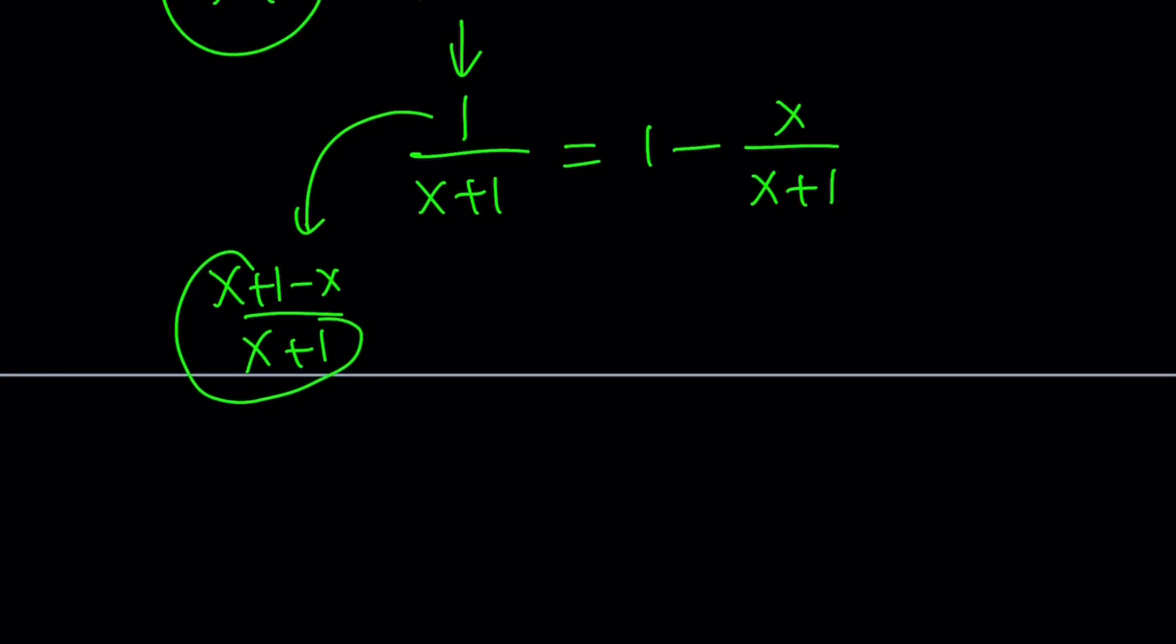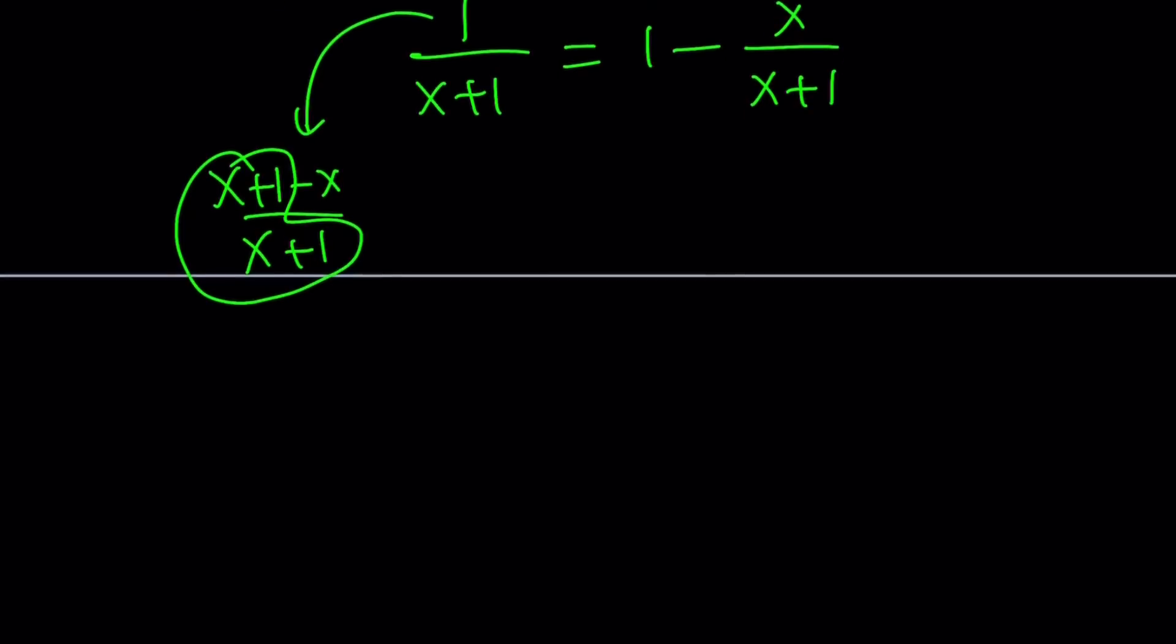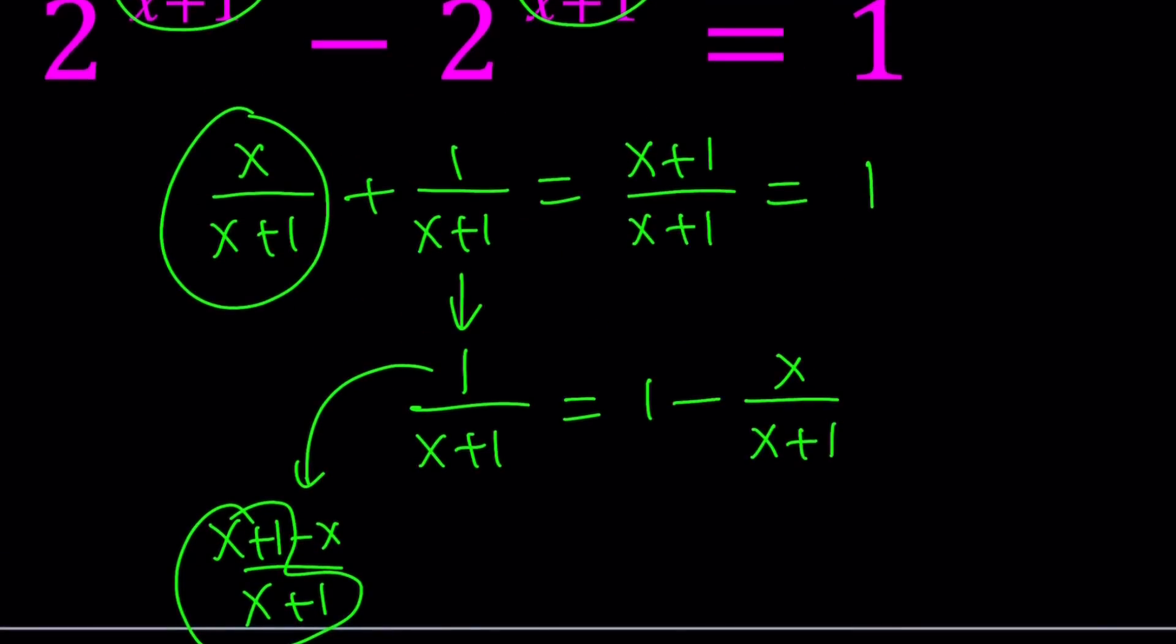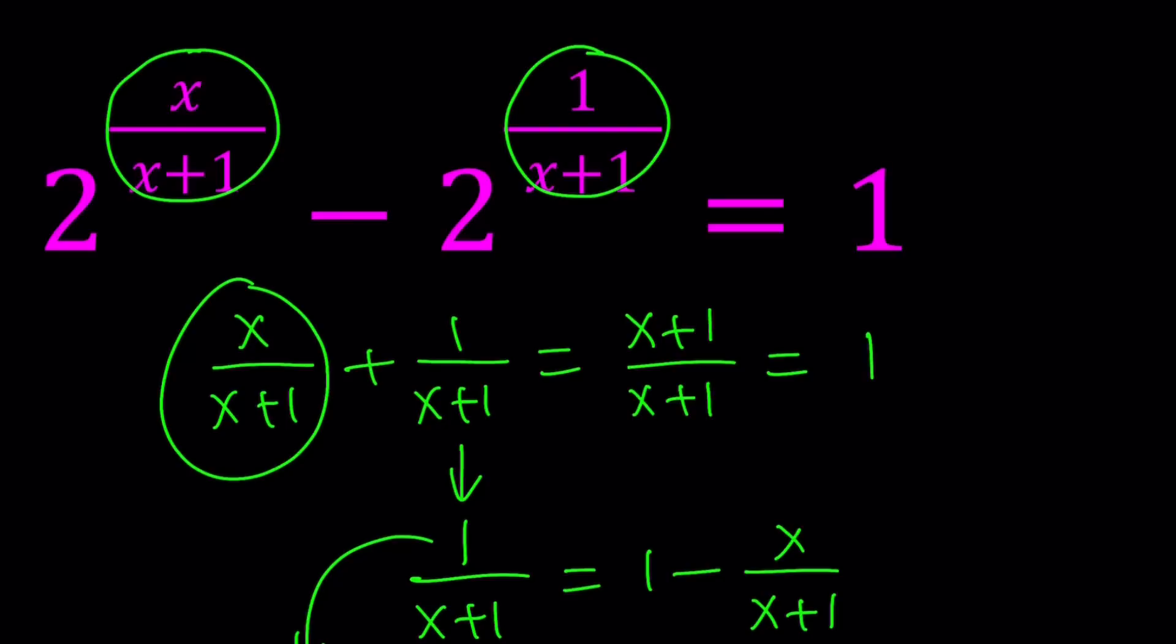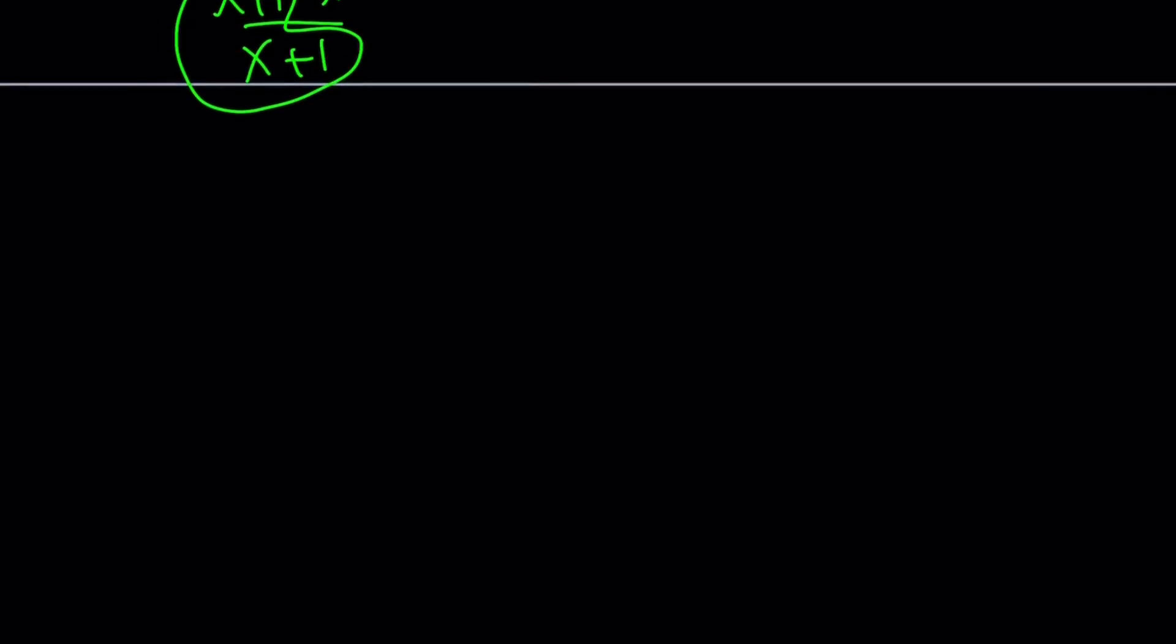Now, we were able to express the other exponent, the second one, in terms of the first one. So let's go ahead and replace the first exponent by something using substitution. Let me rewrite the original problem here: 2 to the power x over x plus 1 minus 2 to the power 1 over x plus 1 equals 1.